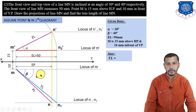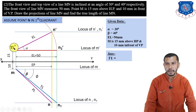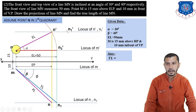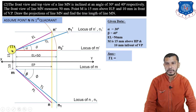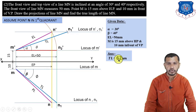Connecting N1 to M gives the true length at angle phi. To find N1-dash, take M-dash as center, measure arc from M to N1, and give an arc on the locus of M-dash to get N1-dash. Connect M-dash to N1-dash to get the true length at angle theta. Measure the true length M-dash to N1-dash — it equals 62mm. This is the final answer for Problem 2.